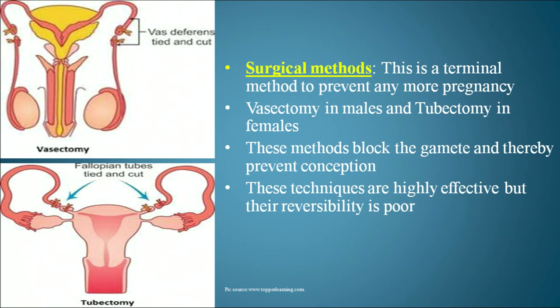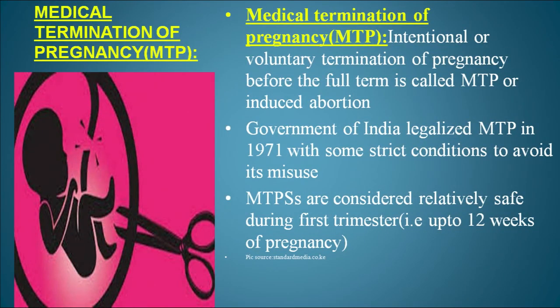Medical termination of pregnancy (MTP), or induced abortion, was legalized by the Government of India in 1971 with strict conditions to avoid misuse. MTPs are considered relatively safe during the first trimester, and it is advisable to undergo MTP within the first trimester, that is up to 12 weeks of pregnancy. Thank you — this was all about reproduction and population control.